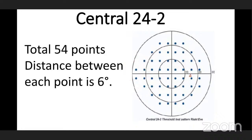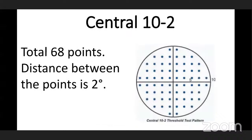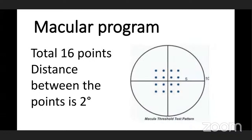Central 10-2 has a total of 68 points, with 2 degrees between each point — used when there is any specified central scotoma. The macular program tests from center to 5 degrees of visual field area, with a total of 16 points and 2 degrees between each point. It is used to test the macular region.